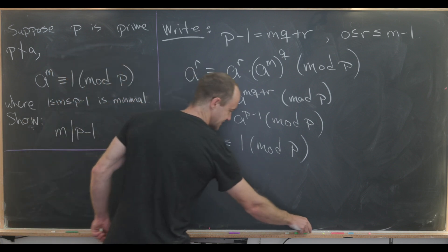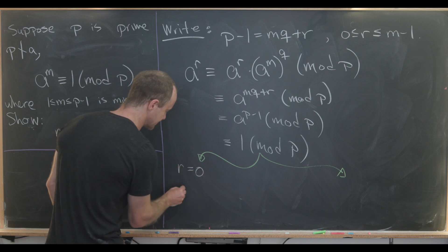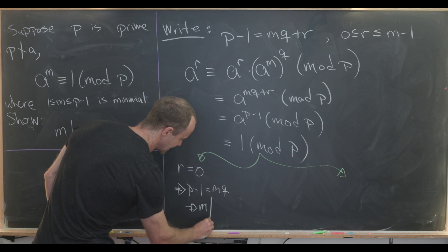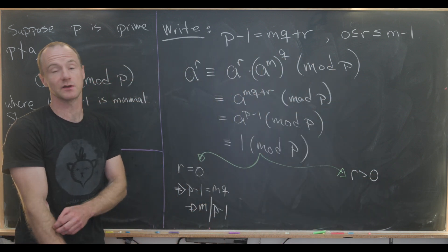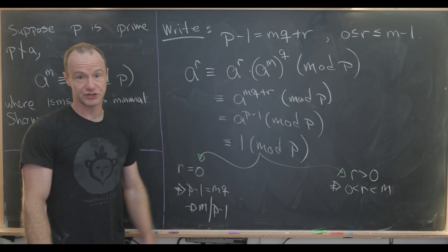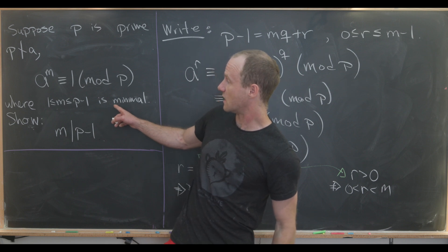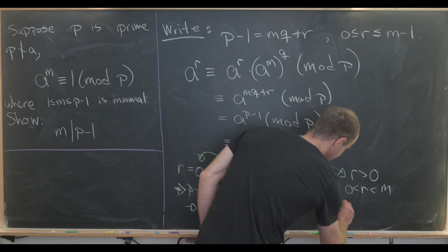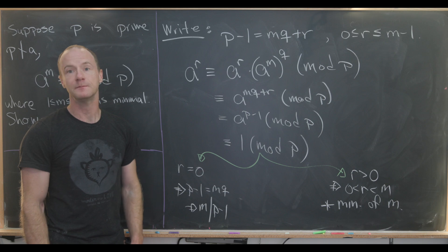So now we branch this into two cases. The first case is R equals 0. If R is equal to 0, then we have P minus 1 equals M times Q, which is the same thing as saying that M divides P minus 1. The next case is R is not equal to 0, which means R is strictly between 0 and M. But let's notice that this contradicts the minimality of M, given that we know A to the R is congruent to 1 mod P. This contradicts the minimality of M because A to the R is congruent to 1 mod P. And that's a good place to stop.